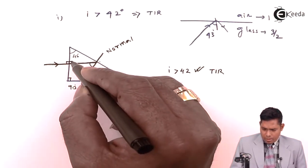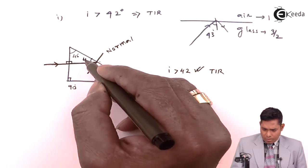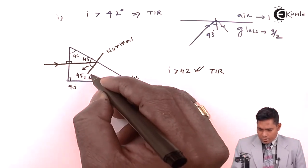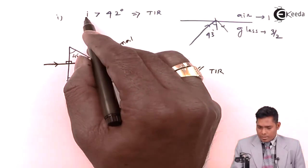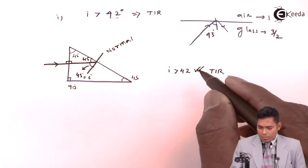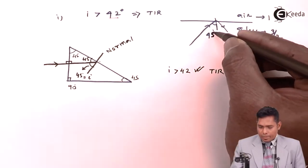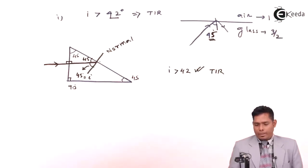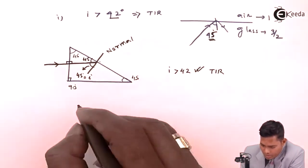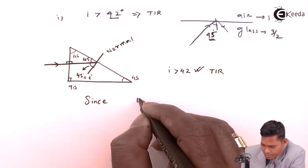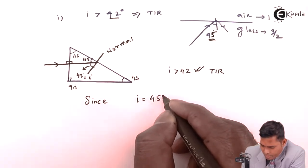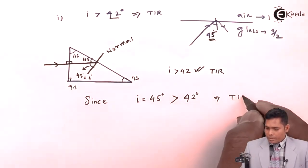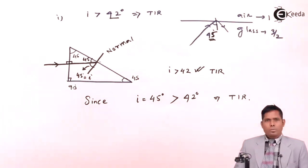This surface is at 90 degrees, and since this is 45 degrees, the angle of incidence at the hypotenuse is also 45 degrees, which is greater than the critical angle of 42 degrees. Therefore, since the angle of incidence is 45 degrees — which is greater than 42 degrees — total internal reflection occurs and the ray is reflected back.